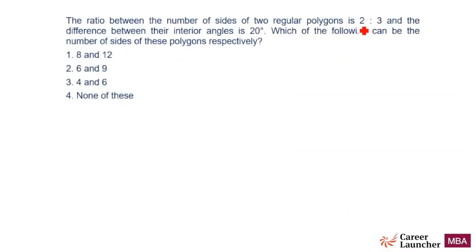The ratio between the number of sides of two regular polygons is 2:3 and the difference between the interior angles is 20 degrees. What can be the number of sides of these polygons respectively? The standard way is to make an equation. No, you should not make an equation.